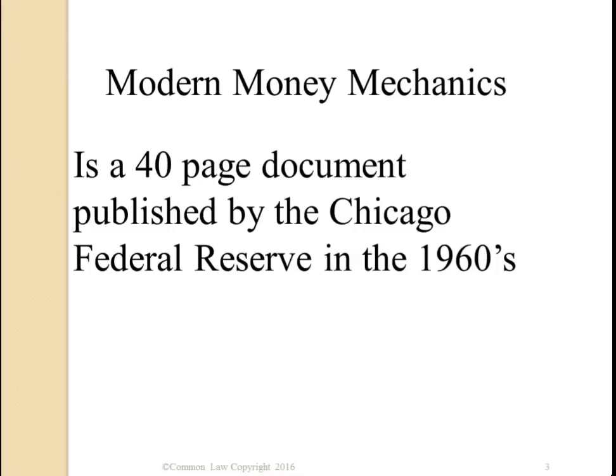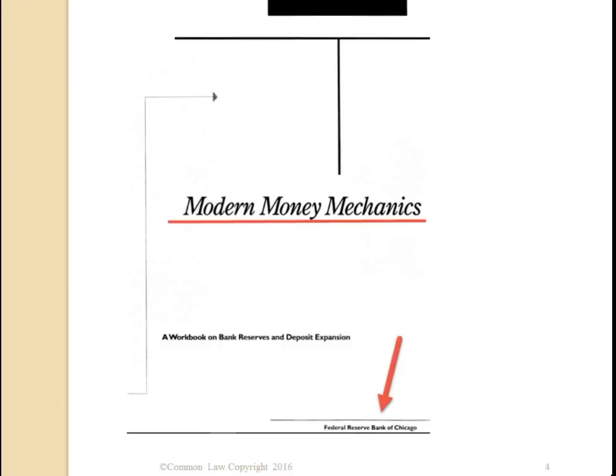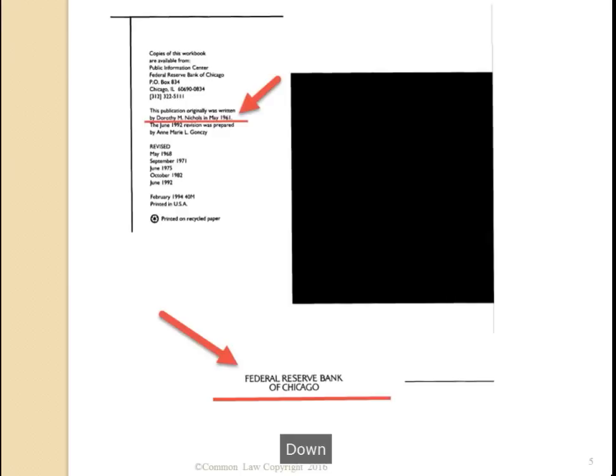There's a book called Modern Money Mechanics. It's a 40-page document published by the Chicago Federal Reserve in the 1960s. This is the cover of the book. You can actually go to Wikipedia and get a version of it — missing some pages, but yes, you can get it at Wikipedia. The front page shows Federal Reserve Bank of Chicago.